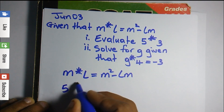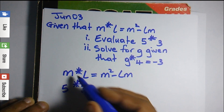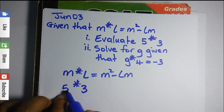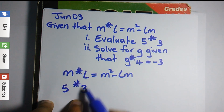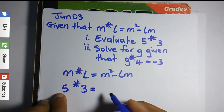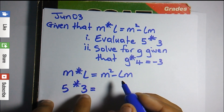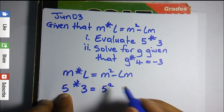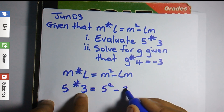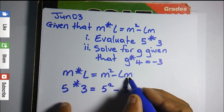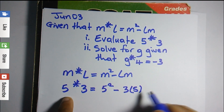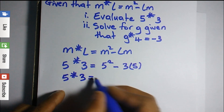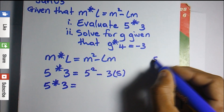We're supposed to evaluate 5★3. If you realize, the asterisk matches up: five represents m and three represents l. So wherever we say m we're going to write five, and wherever we say l we're going to write three. So we have m squared minus l times m, which becomes five squared minus three times five.